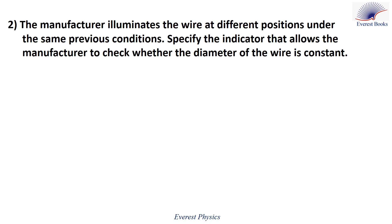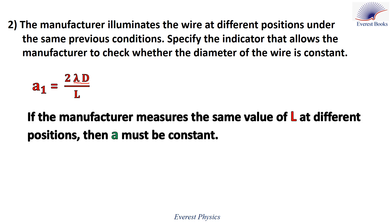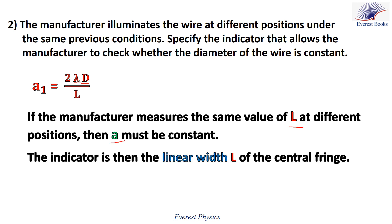Number two: the manufacturer illuminates the wire at different positions under the same conditions. Specify the indicator that allows the manufacturer to check whether the diameter of the wire is constant. Using A1 equals 2 lambda D over L, since lambda and D remain constant, if the manufacturer measures the same value of L at different positions, then A must be constant. Therefore, the indicator is the linear width of the central bright fringe.